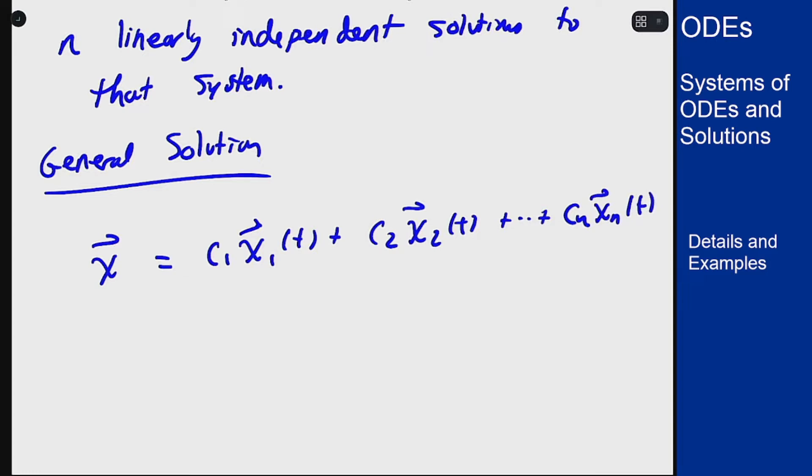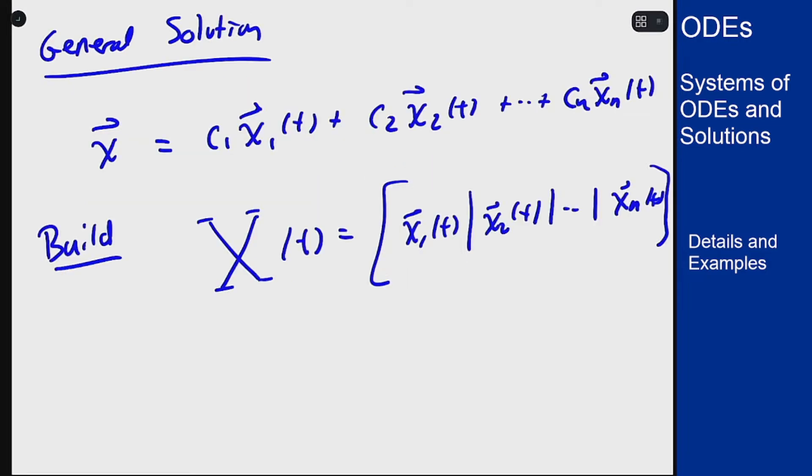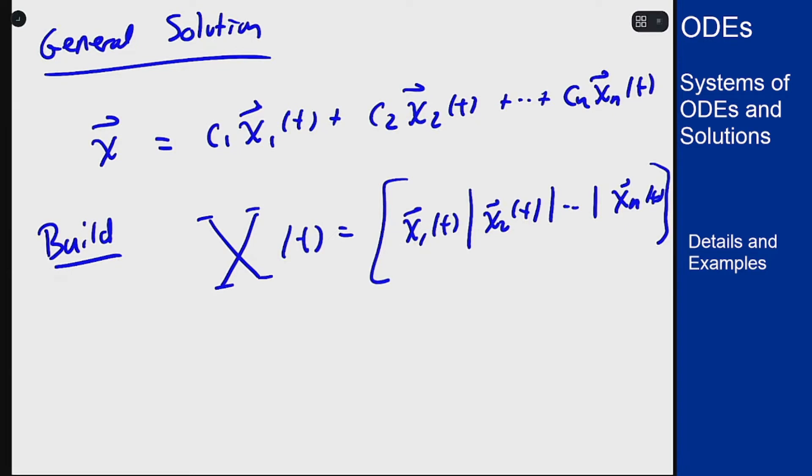But now this is written in a way that looks like vector multiplication. So if I build a new matrix, a matrix capital X of t that has columns being these independent solutions that we found previously, then our general solution is really just this matrix capital X times a vector of constants c, because in each component it's exactly what this does.